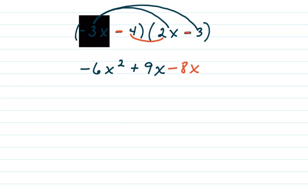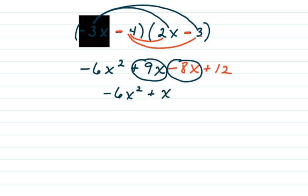And now I'm multiplying a negative 4 times a negative 3. Negative 4 times negative 3 is positive 12. And then again, I'm combining like terms. A positive 9x and a negative 8x. It's going to give you a positive one x plus 12.